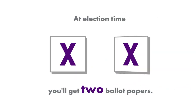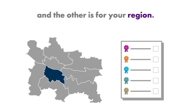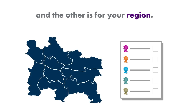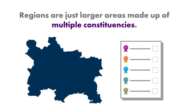At election time, you'll get two ballot papers. One is for the local area, the constituency, that you live in, and the other is for your region. Regions are just larger areas made up of multiple constituencies.